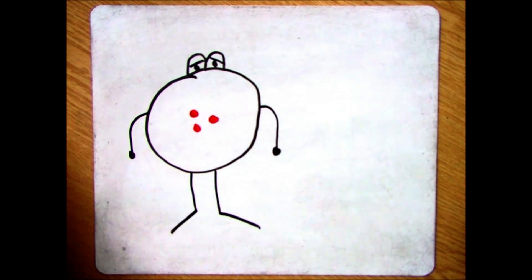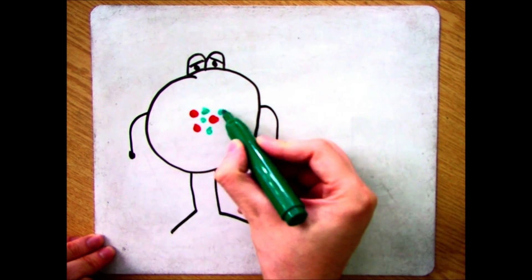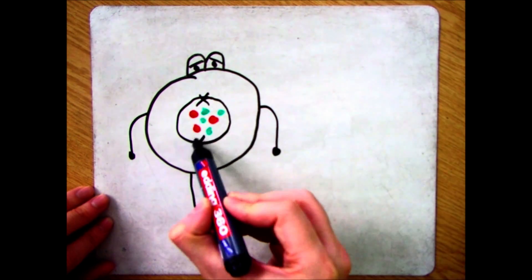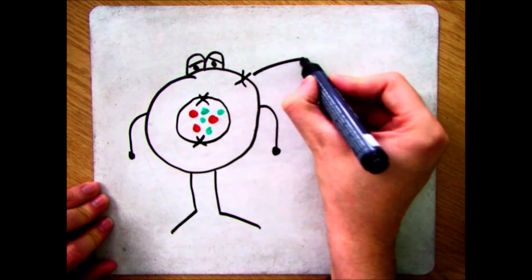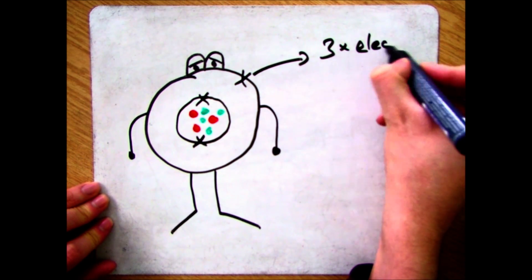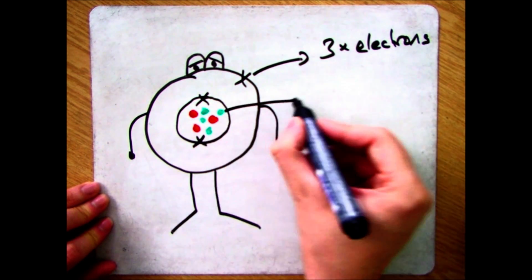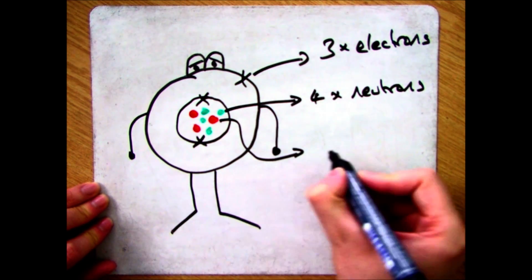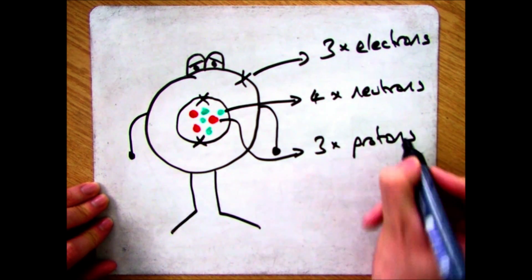So if we focus on the atom lithium, which has got a mass number of 7, which is the number of particles in the middle, and the bottom number of 3, that means we've got 3 protons and 3 electrons around the outside. I know that because the number of protons and neutrons is the mass number. If I've got 3 protons, I've got to have 4 neutrons in there.